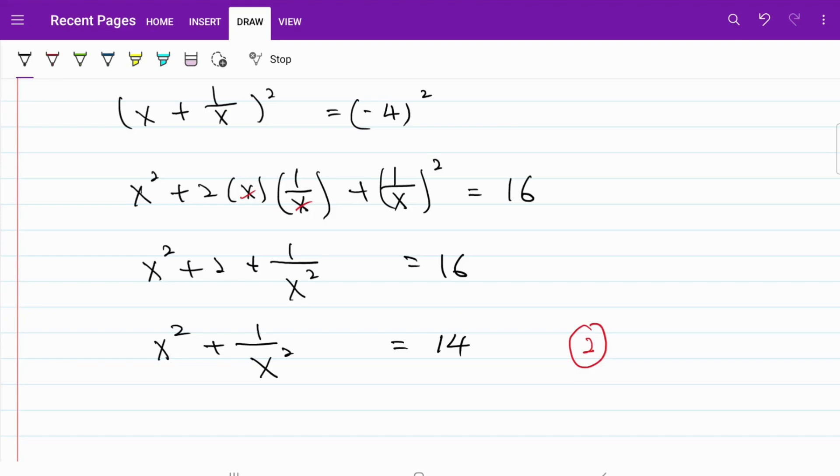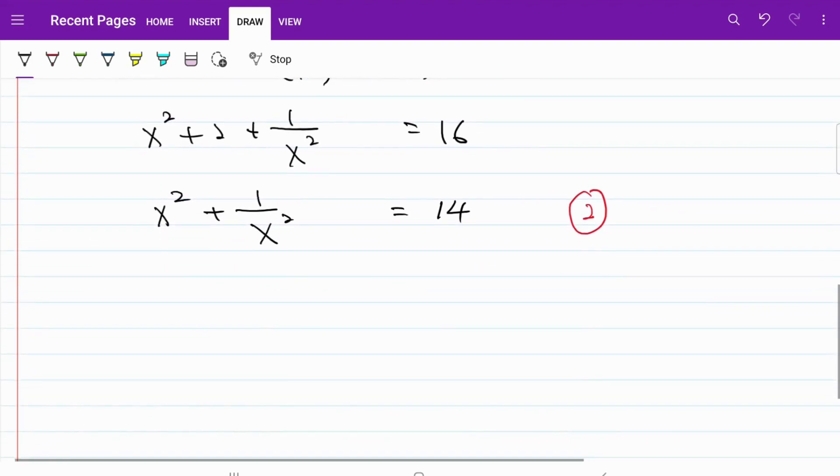But first, let me copy down the fraction. I have x to the power of 4 plus kx squared plus 1 divided by 2x cubed plus kx squared plus 2x. That's equal to 2.